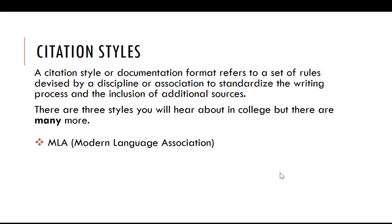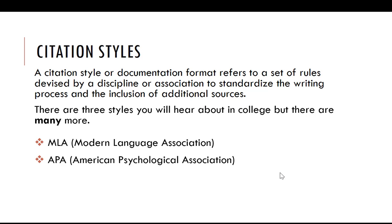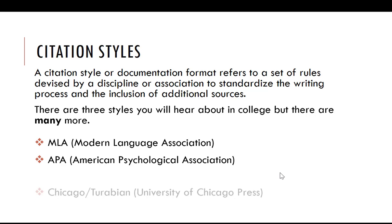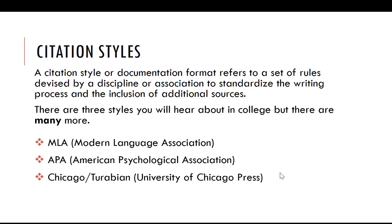MLA, which is very common in English and the humanities; APA, which is used primarily in psychology but is also used in various sciences; and Chicago or Turabian, which is almost exclusively used in history or political science on campus.